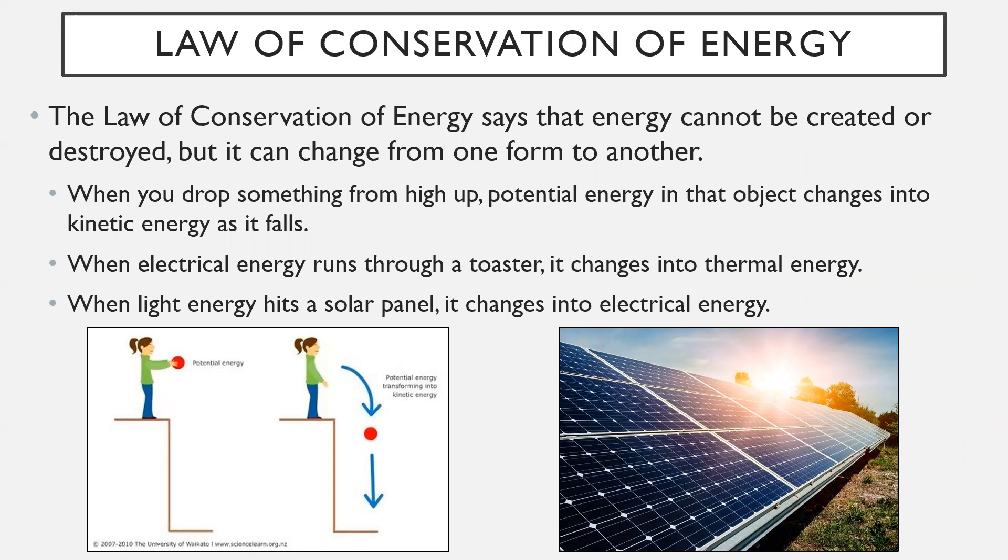Law of conservation of energy. The law of conservation of energy says that energy cannot be created or destroyed, but it can just change from one form to another. So in other words, when you drop something, it has gravitational potential energy. But then as time goes on, that potential energy turns into kinetic energy. You're converting gravitational potential energy into kinetic energy. When electrical energy runs through something like a toaster, it's changing it into thermal energy. Another one is when light energy hits a solar panel, the light energy is turning into electrical energy. The energy is not created or destroyed. It just changes from one form to another.